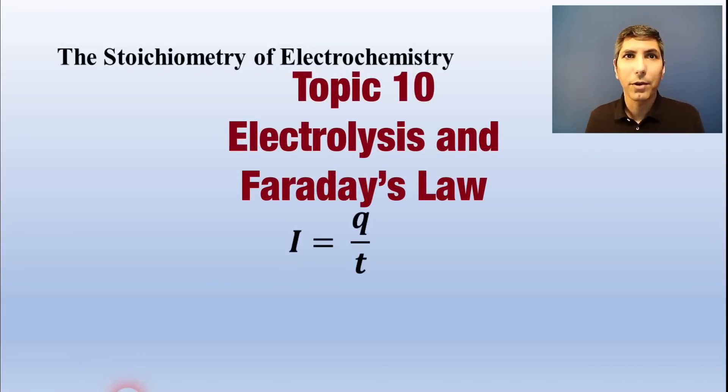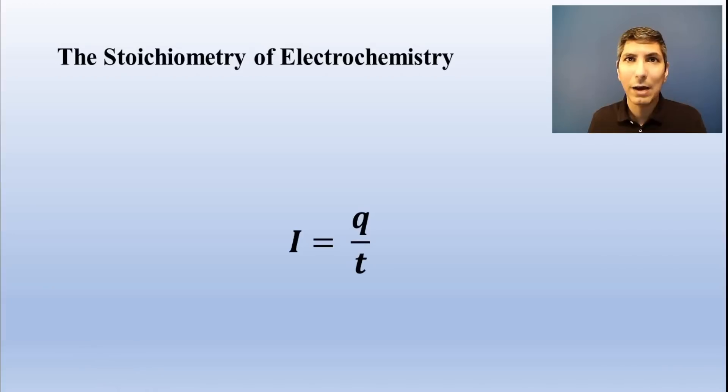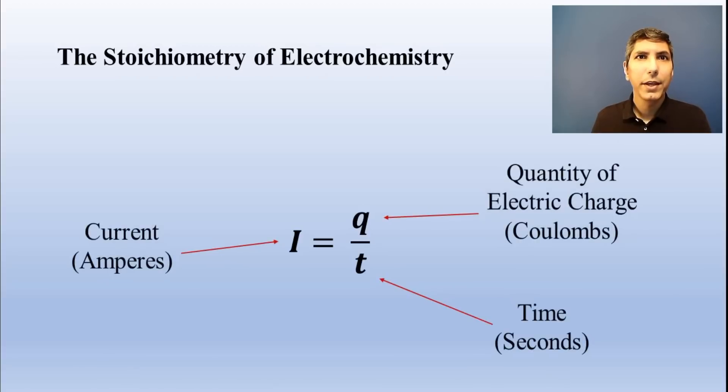Electrolytic cells are non-favored processes which we have to drive using an external power source. These are often used for plating out metals. This equation is used for those types of processes.